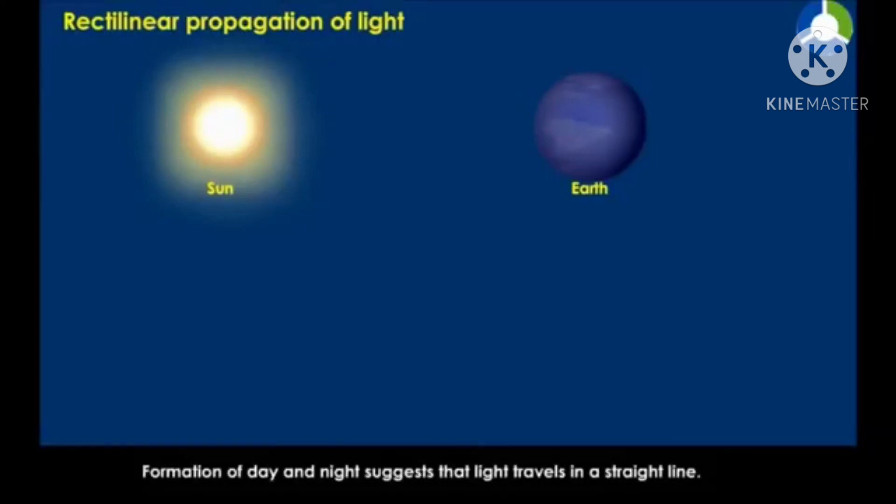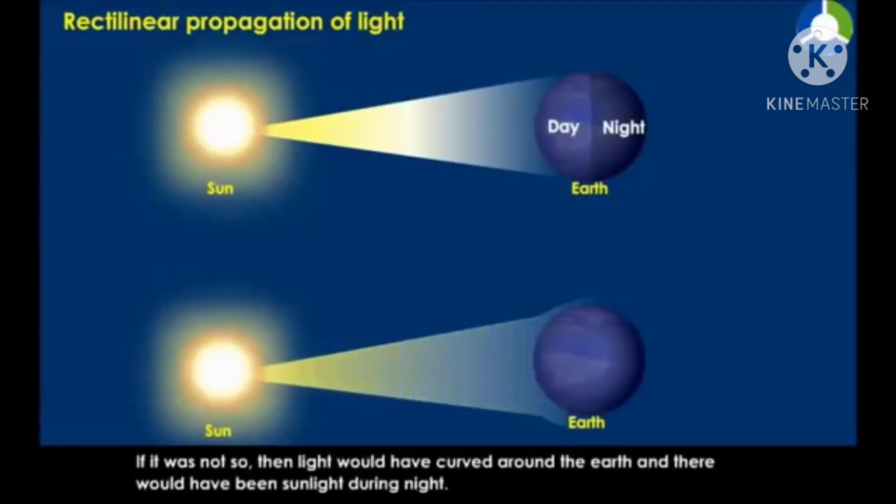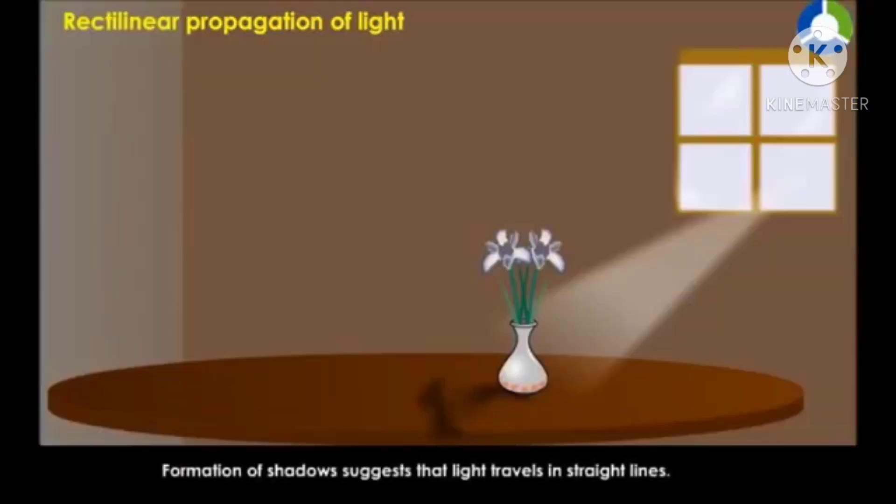Formation of day and night suggests that light travels in a straight line. If it was not so, light would have curved around the earth and there would have been sunlight during night. Formation of shadows also suggests that light travels in straight lines.